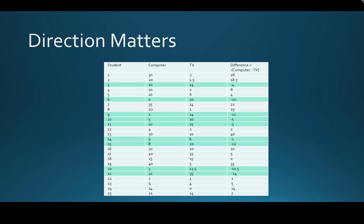Direction does matter for these problems. The negative differences indicate that for those highlighted students, their TV time is more than their computer time — that's valuable information. Negative differences indicate TV time is more; positive differences indicate computer time is more. You calculate the mean and standard deviation using the same process as for one quantitative variable.